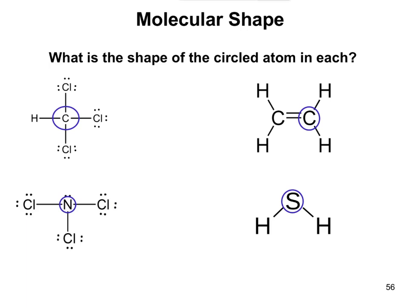Now let's look at a couple examples. What is the shape around the circled atom in each? In this first one, what is the shape around that carbon? We would look at that carbon and say, okay, what is attached to it?